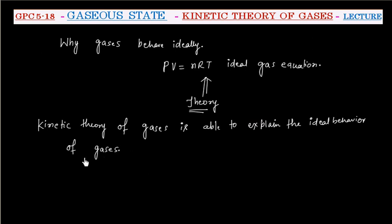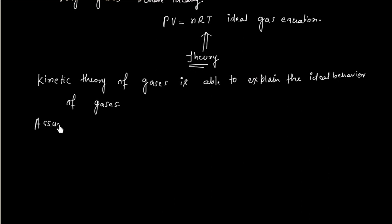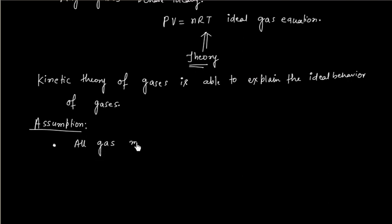Like other theories, kinetic theory of gases also has some assumptions. An important assumption is that a given sample consists of tiny spherical molecules. They all have the same size, same shape, and same mass. So all gas molecules have the same size, same shape, and same mass.